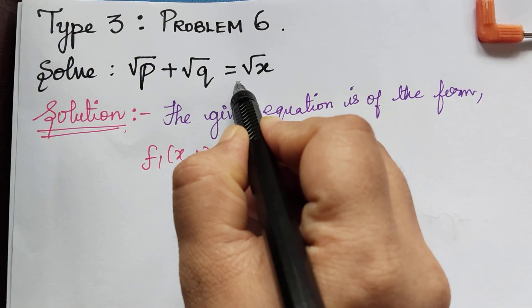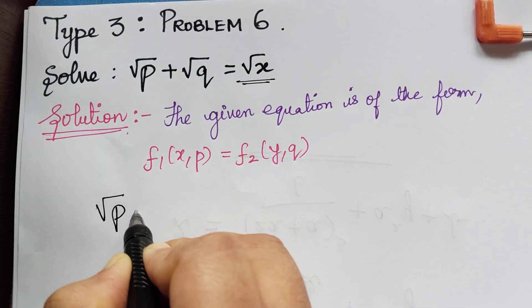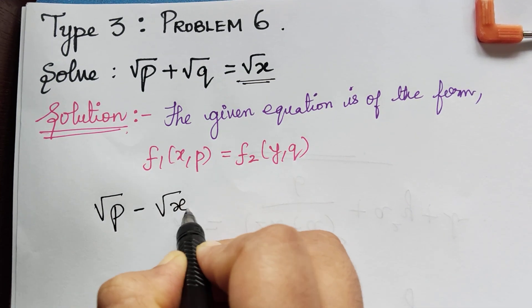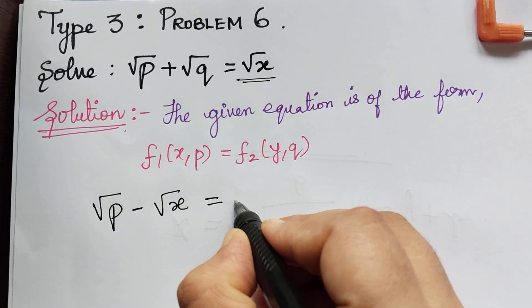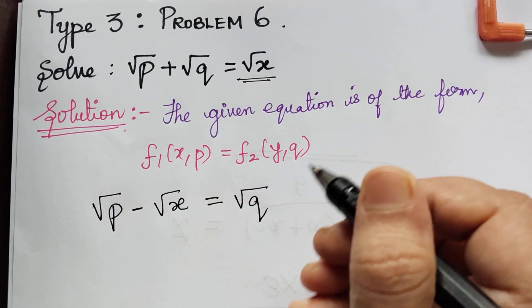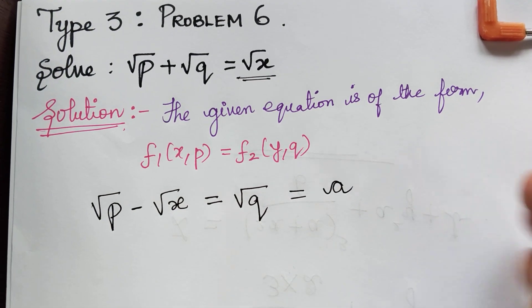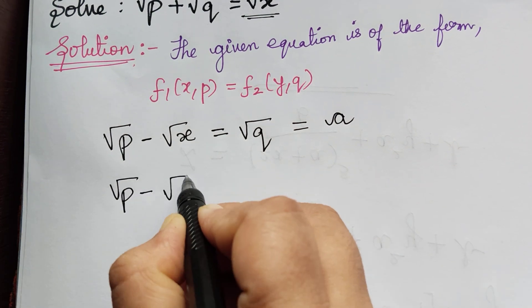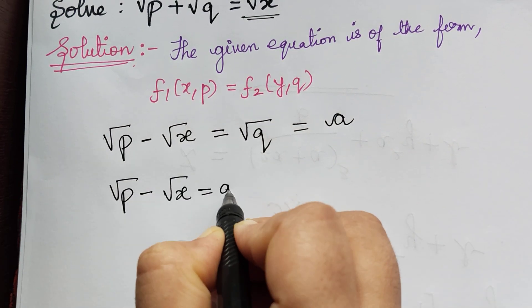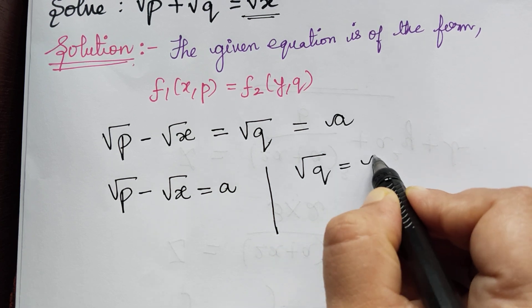So we take the square root of x to the left. So it becomes square root of p minus square root of x equals taking the square root of q to the right, square root of q. And equating these two to a general constant a, we will be having root p minus root x to be equal to a and square root of q is equal to a constant a.